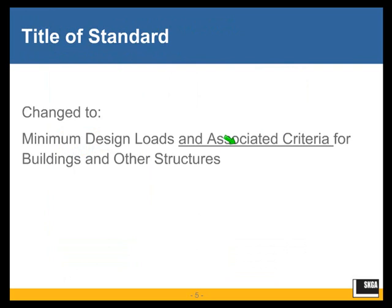We will go through AC710 in a chapter-by-chapter fashion, starting with Chapter 1. But even before we get into Chapter 1, I do want to point out that the title of the standard is changing after all these years. 'Minimum Design Loads for Buildings and Other Structures' is now 'Minimum Design Loads and Associated Criteria for Buildings and Other Structures.'